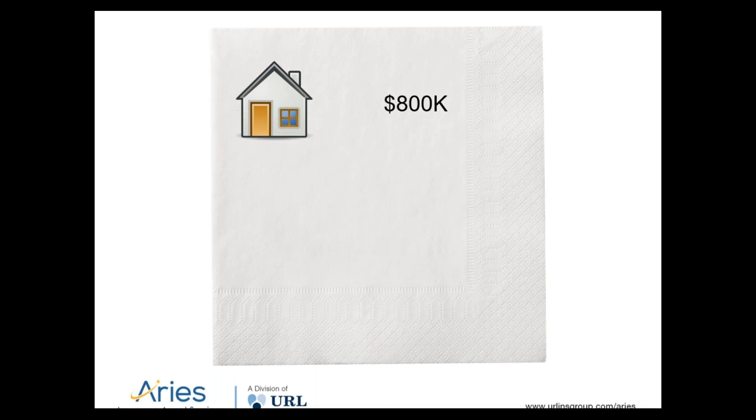The client would most likely come back with a yes. So as the advisor, you'd say: let's take a look at this scenario. You'll draw a house first. You told me your house was recently appraised at $800,000 and you have insurance on it. You also told me that you paid $70,000 for your car and you have insurance on that as well.